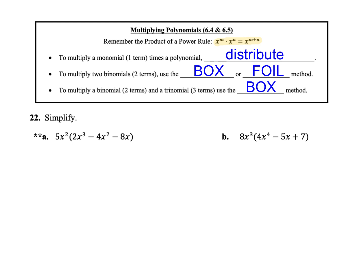In this problem, we're going to start off with just a monomial and a polynomial. Notice how there's just one thing here on the outside of the parentheses. When that's the case, we don't need to set up a box. We can just go right to the distributive property, where we take everything inside the parentheses and we multiply it by 5x squared. When you do that, you're multiplying the numbers and you're using the exponent properties on the variables. So for example, 5 times 2 is just 10 — just regular multiplication — but then I want to add the exponents together for my variables.